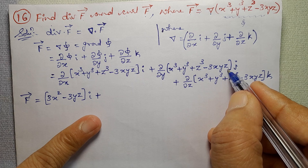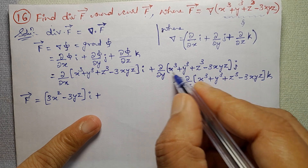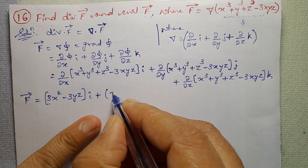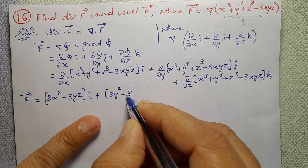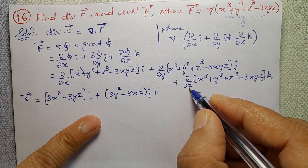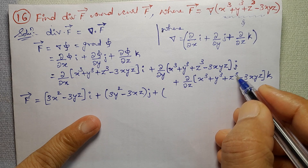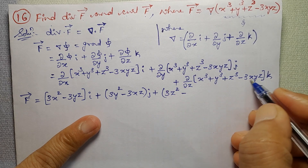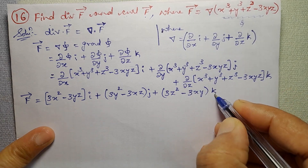Plus partial derivative with respect to y: x is treated as constant, so differentiating y³ gives 3y² − 3xz, times j. Plus partial derivative with respect to z: treating other variables as constant, differentiating z³ gives 3z² − 3xy, times k.